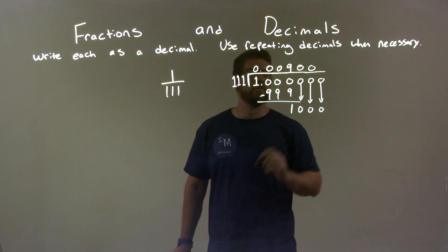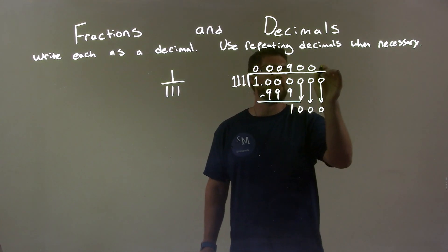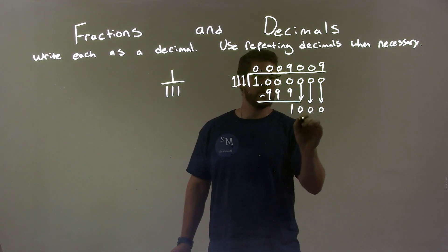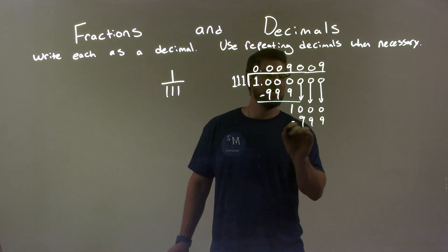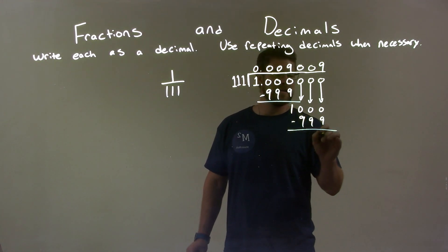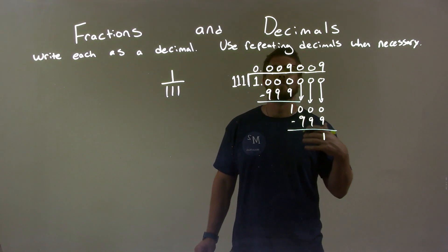We have 1,000. Now, 111 goes into 1,000. Well, that's 9 times, right? 9 times 111 is 999. We subtract it. 1,000 minus 999 is just 1. And the process repeats.